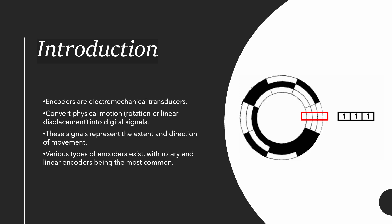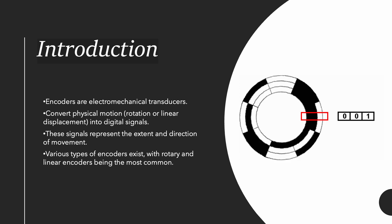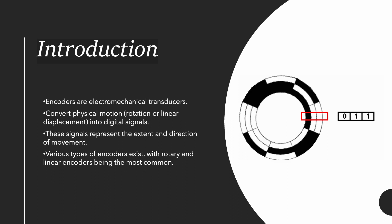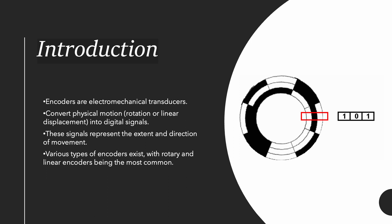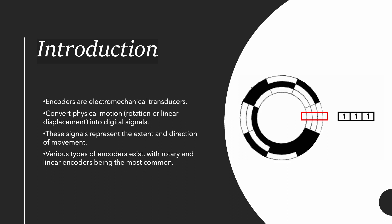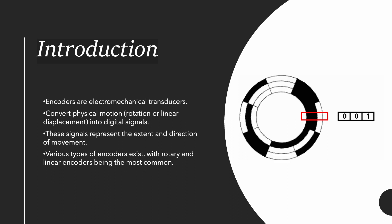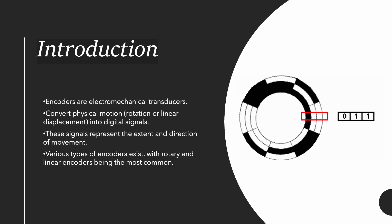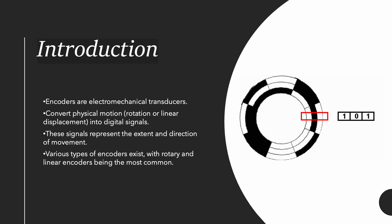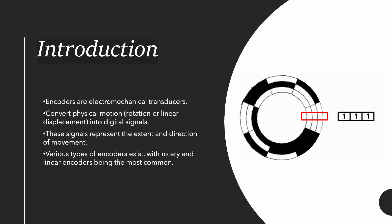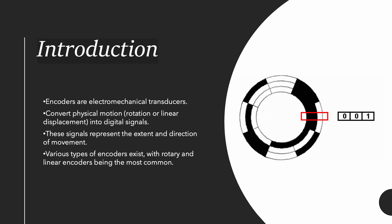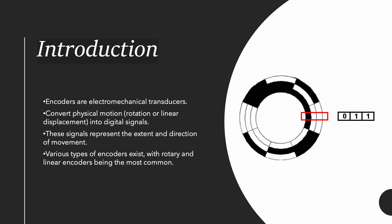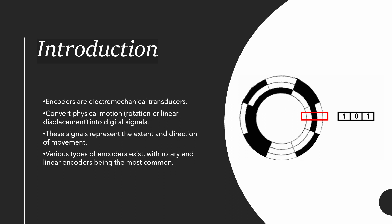The disc is divided into 8 parts, and each part has a different combination of slits. So we can determine the position of the disc if we know the electrical output, and we can determine the direction using 2 or more signals.